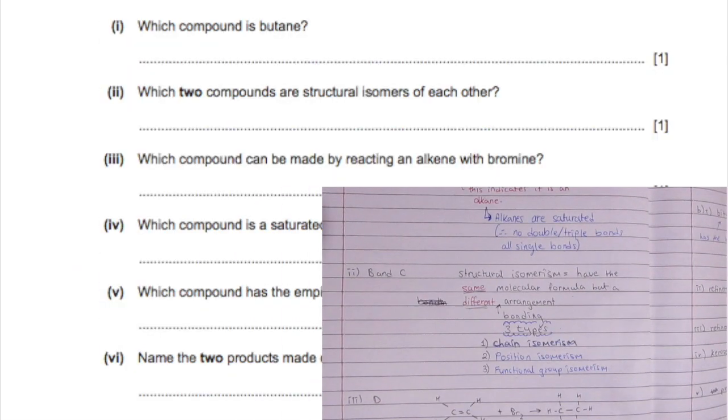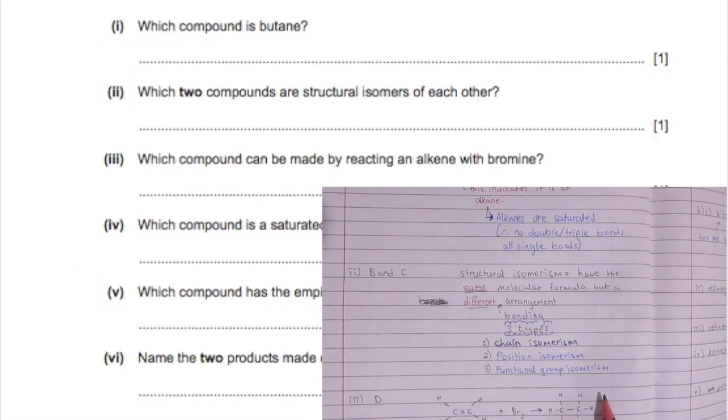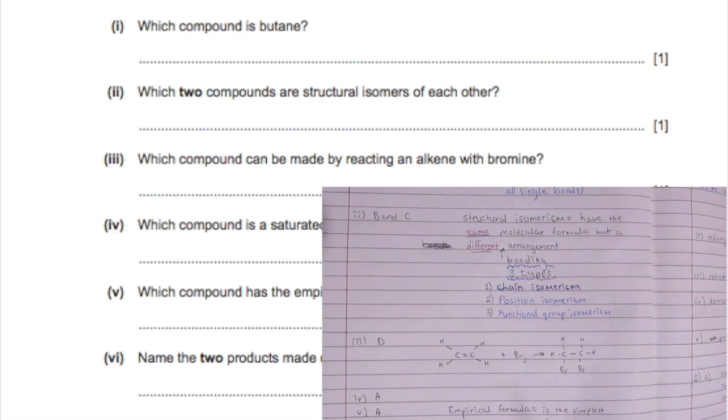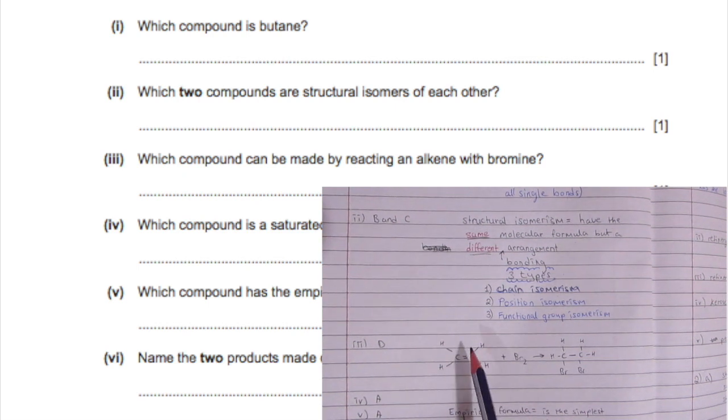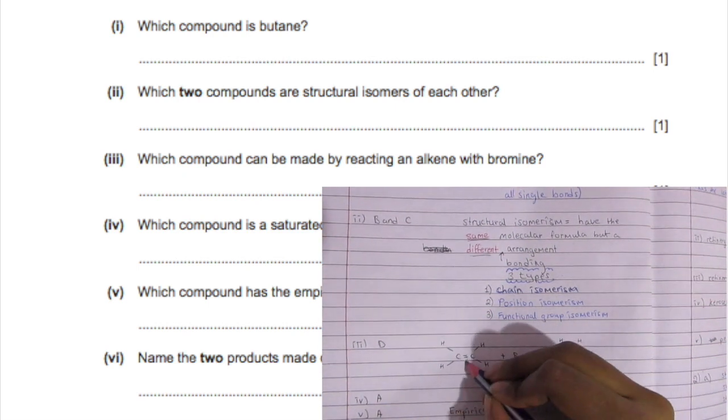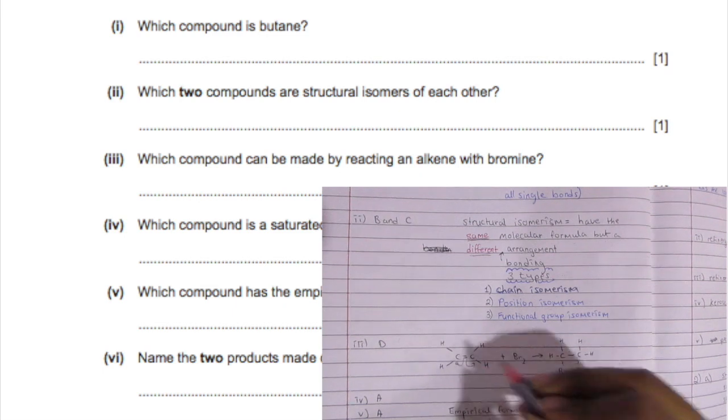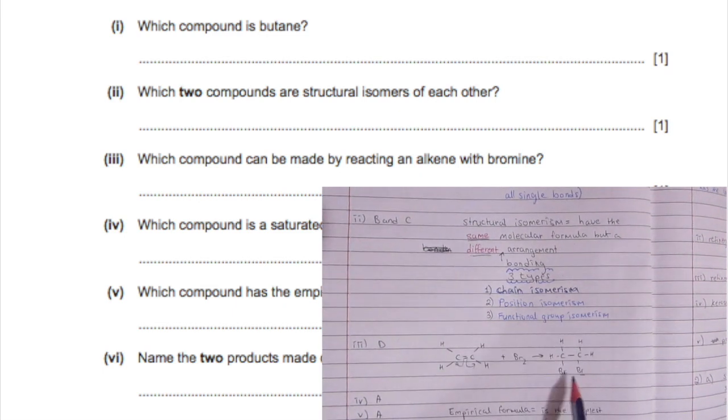Which compound can be made by reacting an alkene with bromine? That would be D. If you have ethene, for example, you would open up the double bonds and then the bromine will attach. It doesn't matter where you attach the bromine—top, side, or bottom—because single bonds rotate and end up being the same.